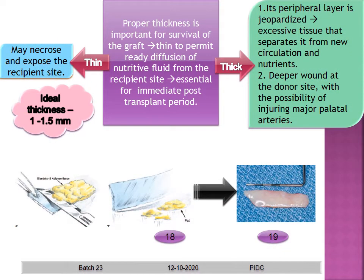Proper thickness of the graft is critical for survival. It must be thin enough to permit ready diffusion of nutritive fluid from the recipient site during the immediate post-transplant period, yet thick enough not to necrose. It should not be so thick that excessive tissue separates it from new circulation and nutrients, or that it causes deeper wound at the donor site with risk of injuring the major palatal arteries. The ideal thickness is around 1 to 1.5 mm.